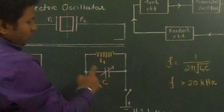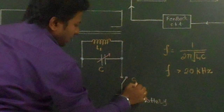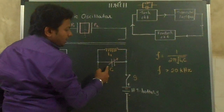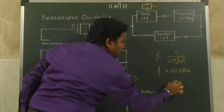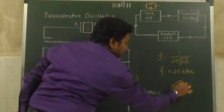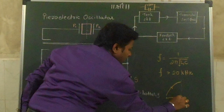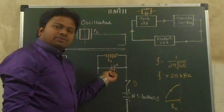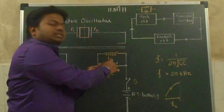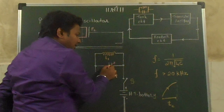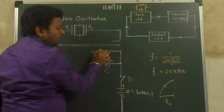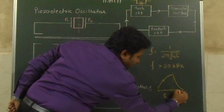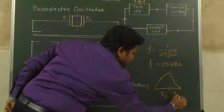Now let us start with the working of the circuit. Initially we will press a switch S. The moment we press switch S, the battery gets connected in the circuit and the capacitor gets charged. This graph explains the charging process of a capacitor, and from here to here we have the time of charging of the capacitor. Once the capacitor is fully charged, the discharging of the capacitor will start. The discharging curve will be like this — from here to here we have the time of discharge of capacitor C.